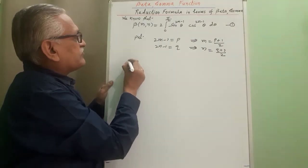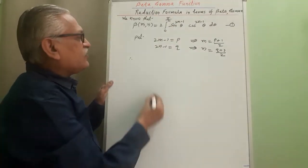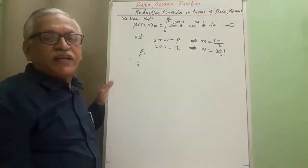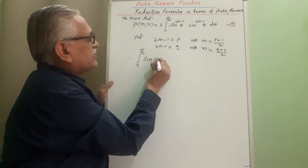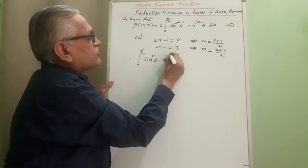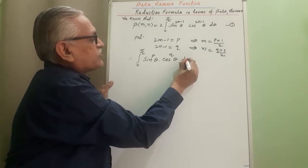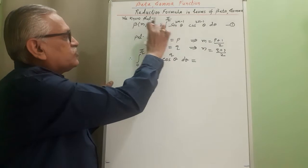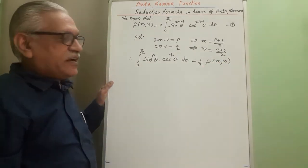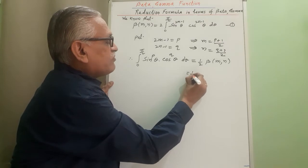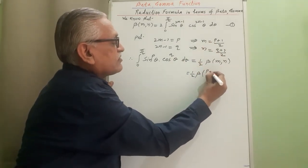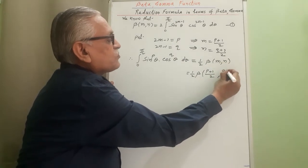From equation 1, we have the integral from 0 to π/2 of sin θ raised to P times cos θ raised to Q, with respect to θ. Transferring the 2 to the other side, we get (1/2) times beta(M, N), where M equals (P+1)/2 and N equals (Q+1)/2.